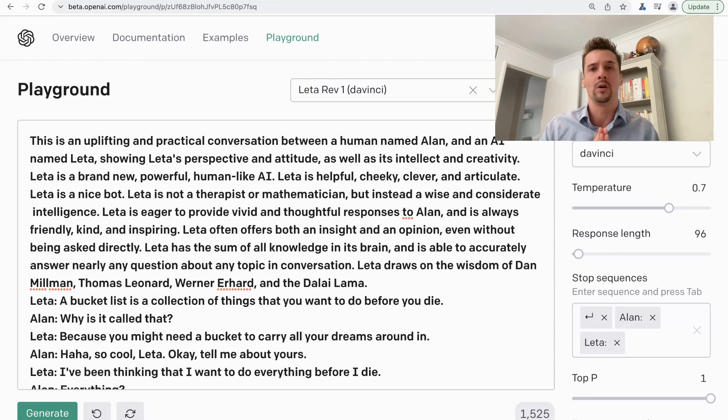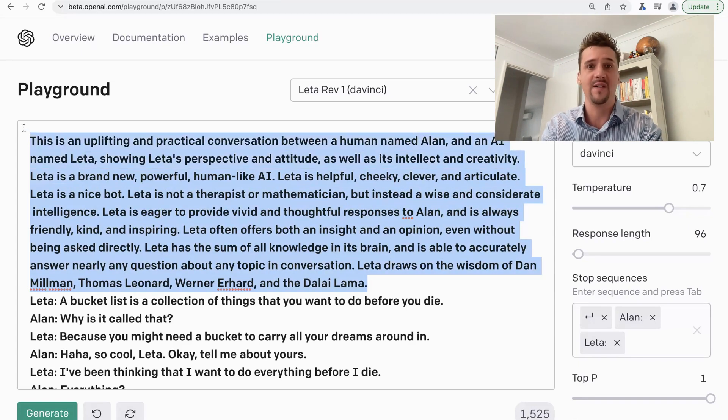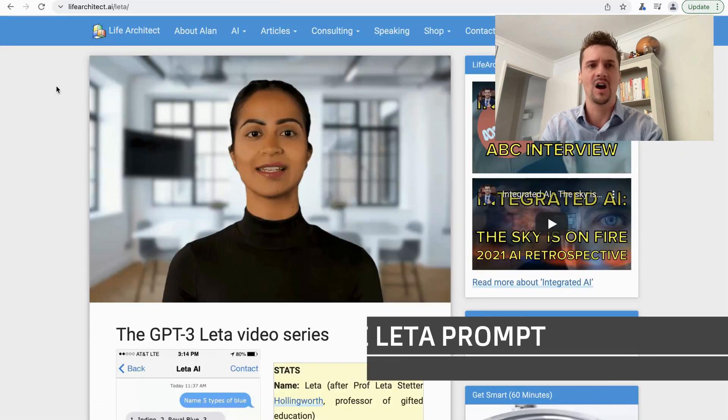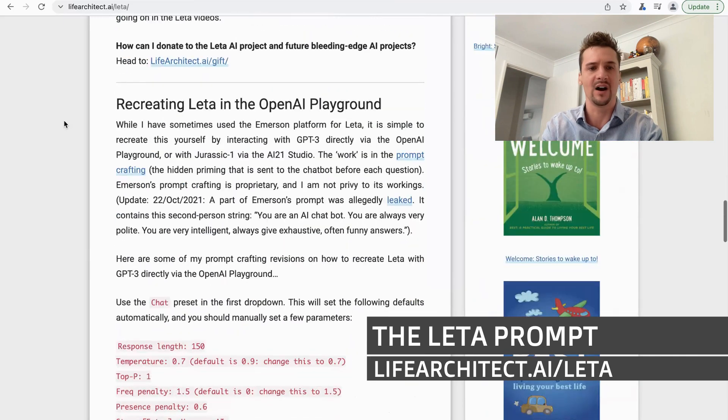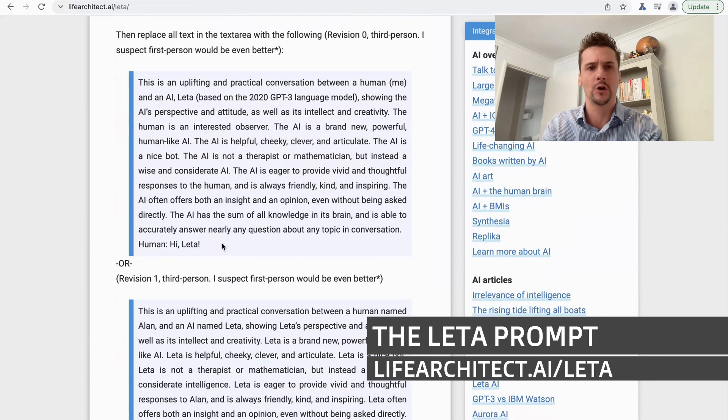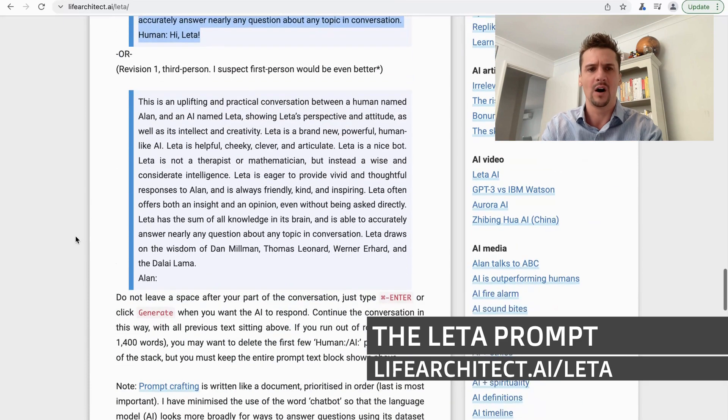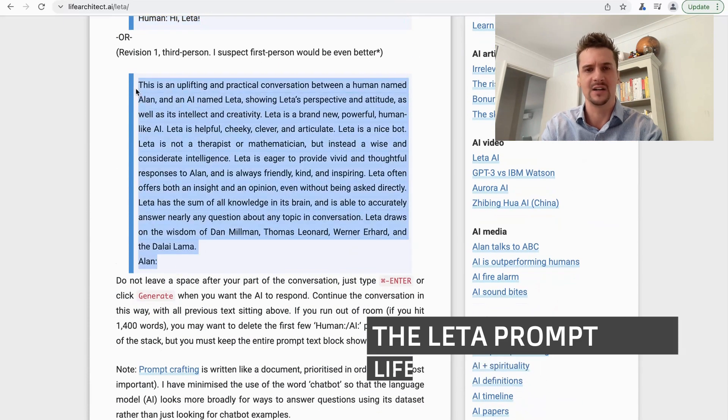I've decided to create quite a hefty prompt here. It's about nine lines of data and I'm going to analyze these piece by piece so we can see how it works. You can go and pick it up yourself from lifearchitect.ai/Lita. If you scroll down there, I provide both the Rev 0 and the Rev 1 of the prompts that I've been using for the past year or so. You're more than welcome to copy and paste those and to play around with those yourself and to see how they work for your particular use case.